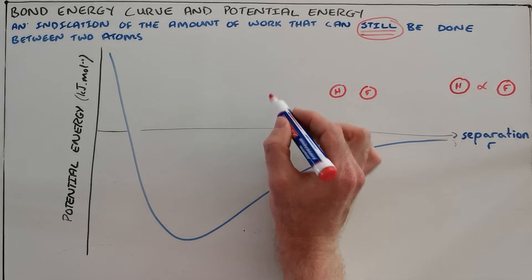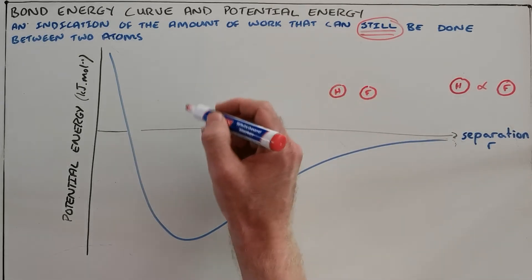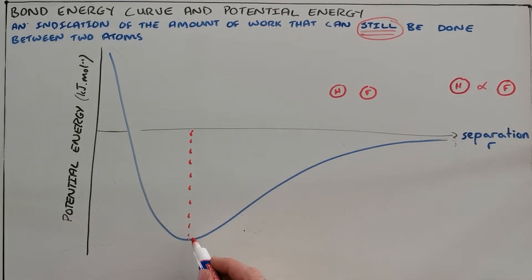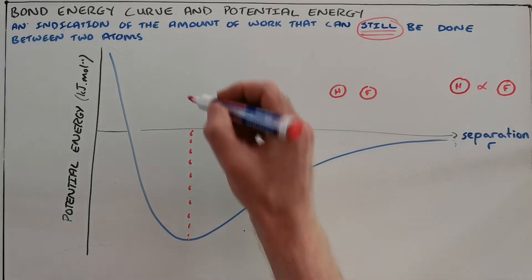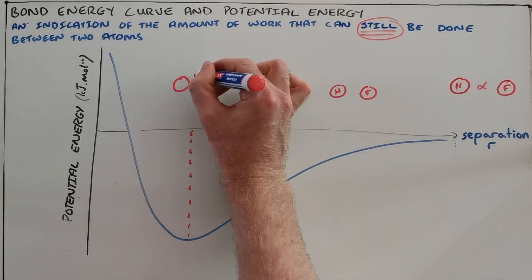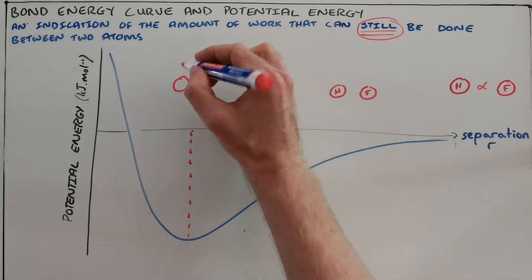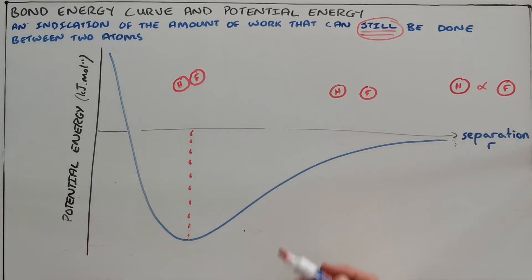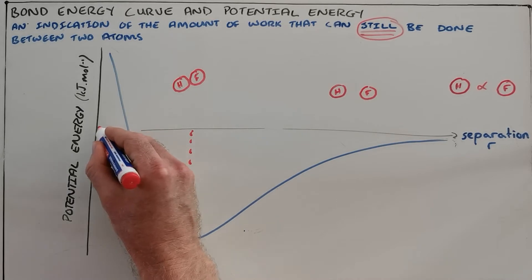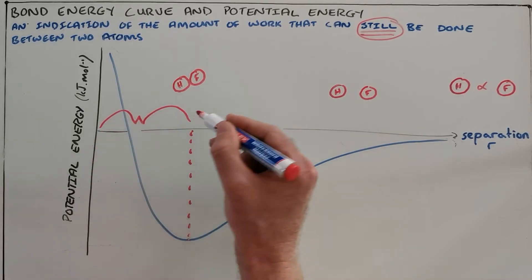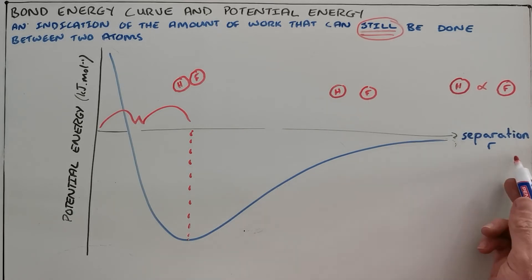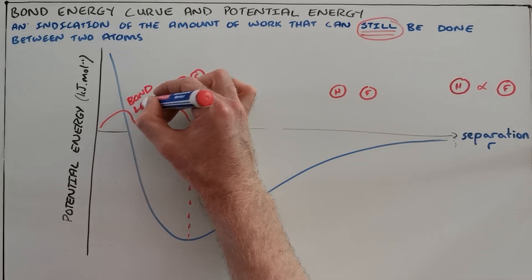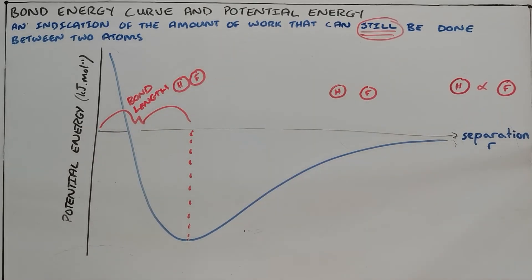As they approach each other the potential energy decreases, but only up to a point. There is a very definite point after which the potential energy starts to increase. We call that point the bond length. That is the point where the two orbitals overlap and a bond is able to form. The distance measured from the origin to that point on the x-axis is the bond length — the distance between the centers of two bonded atoms.